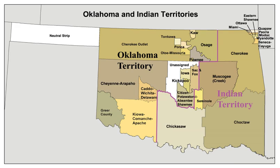Indian Territory, also known as the Indian Territories and the Indian Country, was land within the United States of America reserved for the forced resettlement of Native Americans. The general borders were set by the Indian Intercourse Act of 1834. The territory was located in the central United States. While Congress passed several organic acts that provided a path for statehood for much of the original Indian country, Congress never passed an organic act for the Indian Territory. Indian Territory was never an organized incorporated territory of the United States. In general, tribes could not sell land to non-Indians. Indian tribes were largely self-governing, were suzerain nations, with established tribal governments and well-established cultures. The region never had a formal government until after the American Civil War.